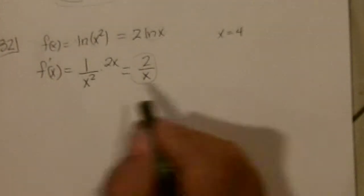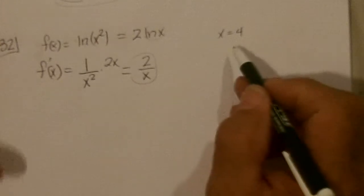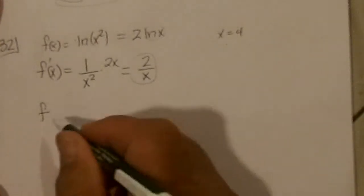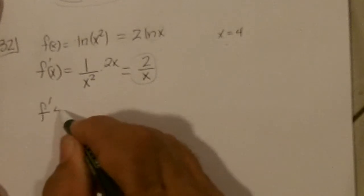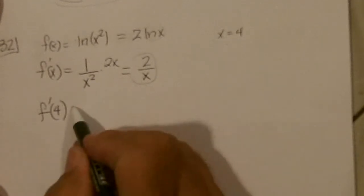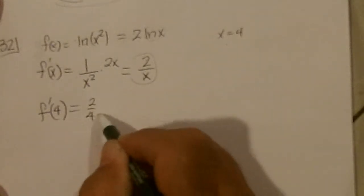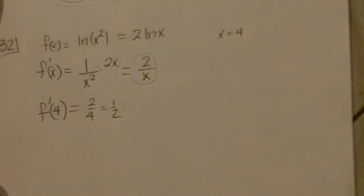Now, we're supposed to find the equation in the tangent line when X is 4. So we've got to find the slope at 4, which is going to be 2 over 4 or 1 half. So that's our slope.